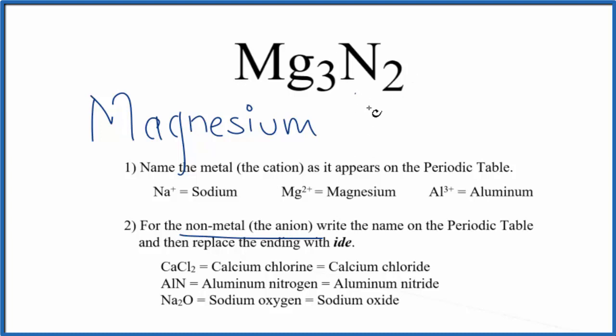Next, for the non-metal, that's the nitrogen, we're going to write the name as it appears on the periodic table. Start with a small n. But we're going to replace the ending with ide.